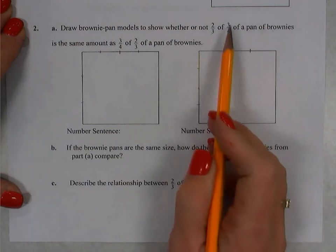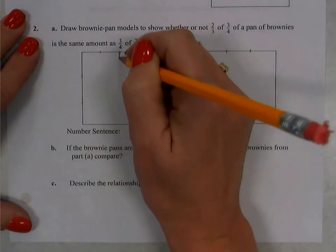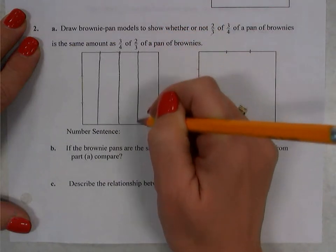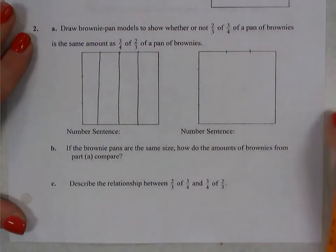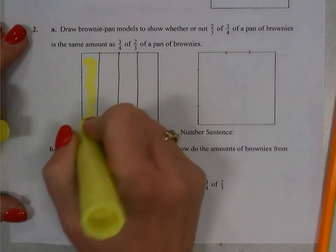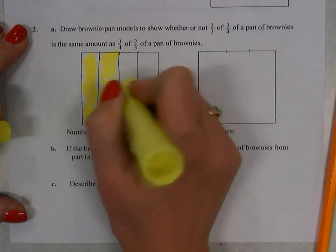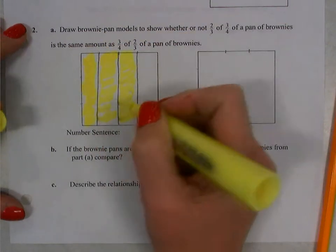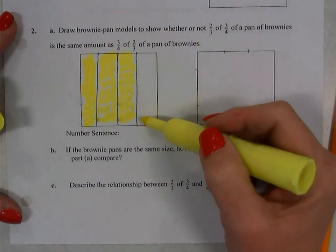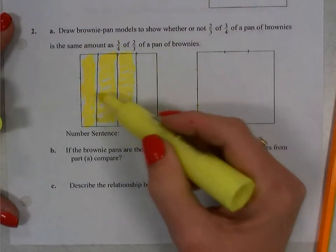Three-fourths is the amount of the pan that has brownies in it. So the first thing that we want to do is we want to divide our pan into four equal sections. Now three of those four parts have brownies in them. So we are going to use our highlighter or the lighter colored pencil and we are going to highlight those three sections that represent the brownies that are currently in the pan. So you can see that the pan is not full. We have removed some of the brownies. What's left is three-fourths of this entire brownie pan.